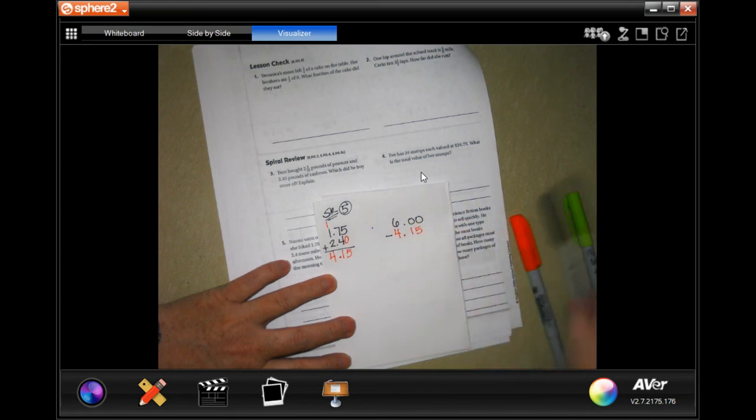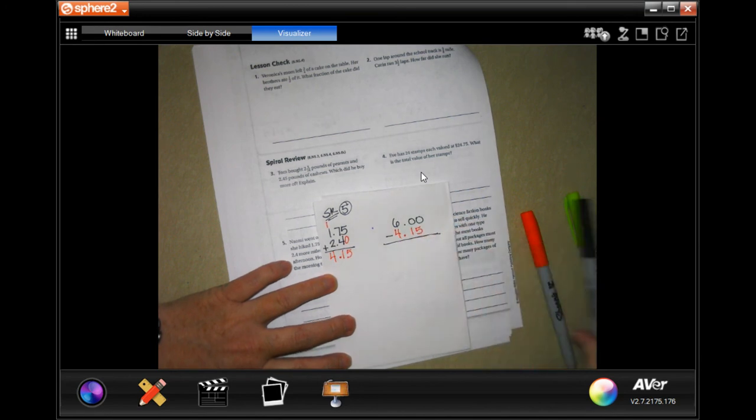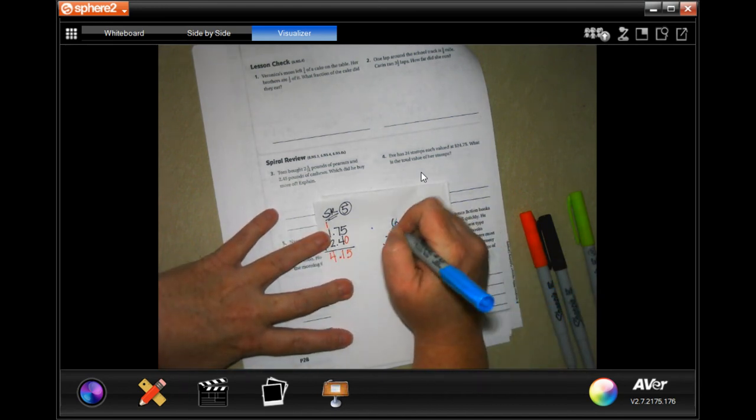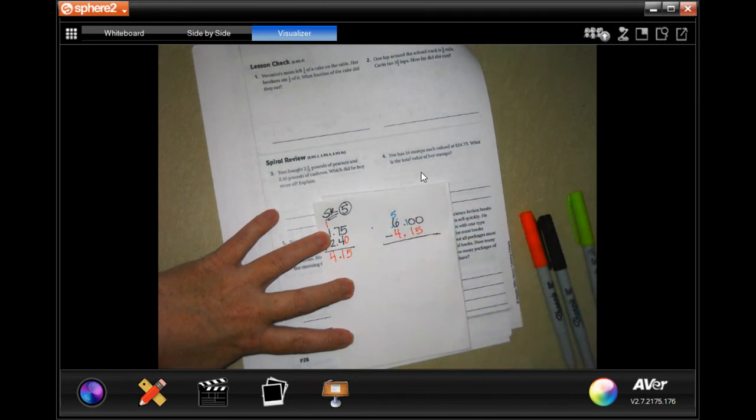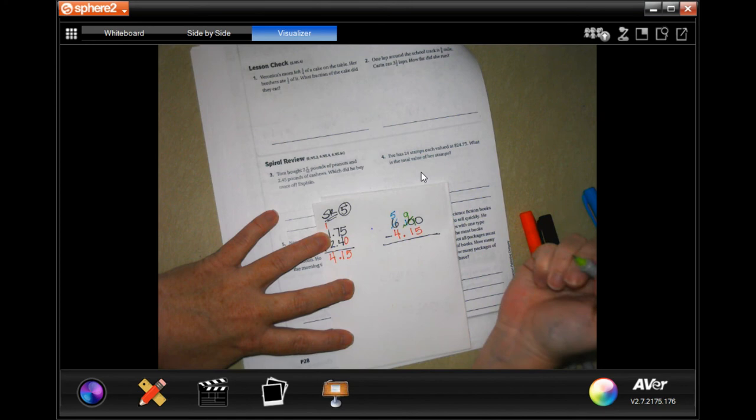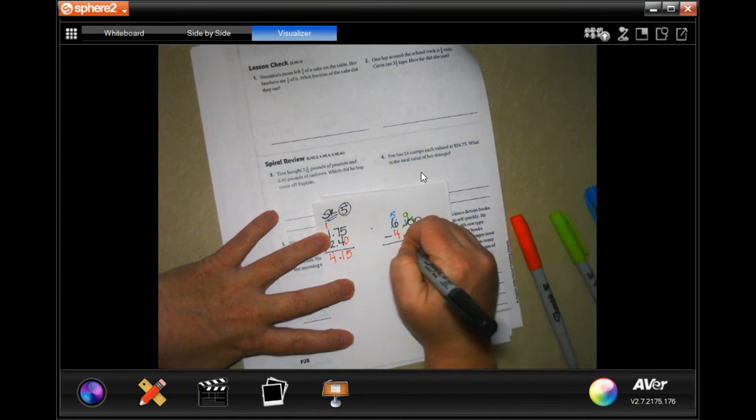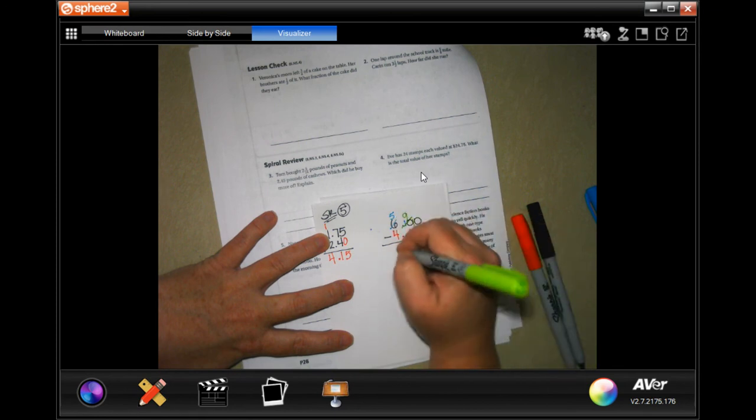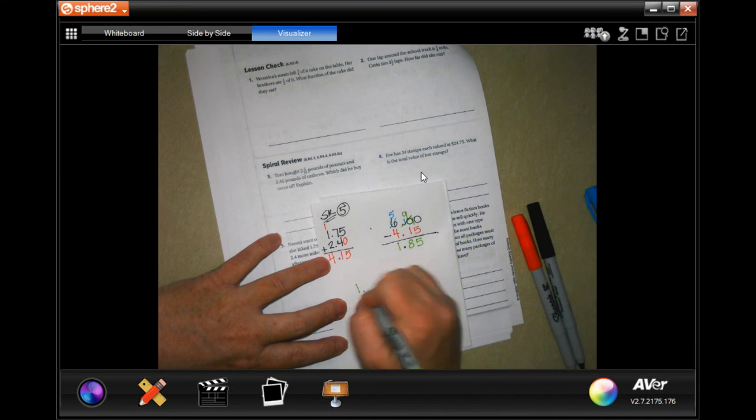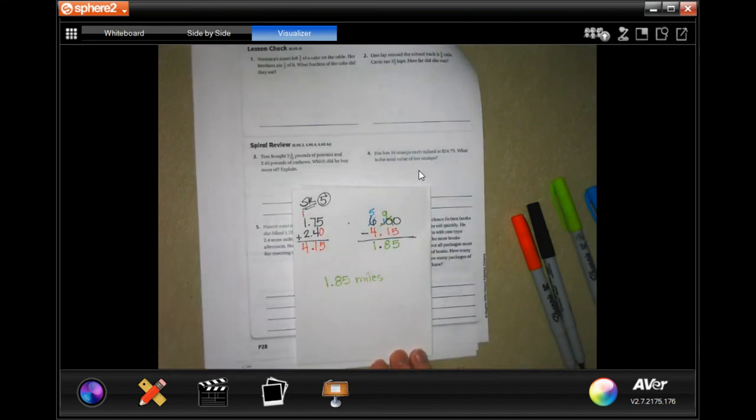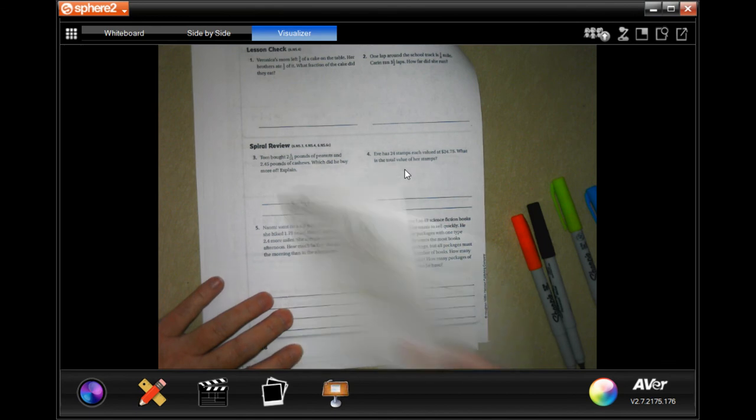We need to subtract what she hiked in the morning, so we know how much further she hiked in the morning than in the afternoon. I cannot take 5 or 1 away from the 0, so I have to go all the way over, take one of those. That makes this a 10. Now I need to borrow one of those, making it a 9, and then that makes this one a 10. Now I'm going to drop down my decimal. And then, 10 minus 5 is 5. 9 minus 1 is 8. 5 minus 4 is 1. So 1.85 miles. You could say farther, you could say 1.85 miles farther. But Miss Lee is lazy when it comes to writing stuff out, so we're writing miles.